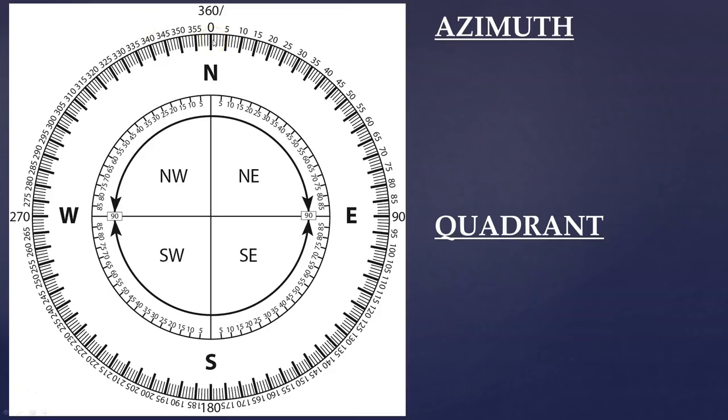Just remember for azimuth, your north is zero and you go all the way around until you come back to north at 360. So north is either 360 or zero. East is 90, south is 180, west is 270 and all the numbers in between. All you need to do with azimuth is just write a number with a degree symbol. That's azimuth, it's pretty straightforward.